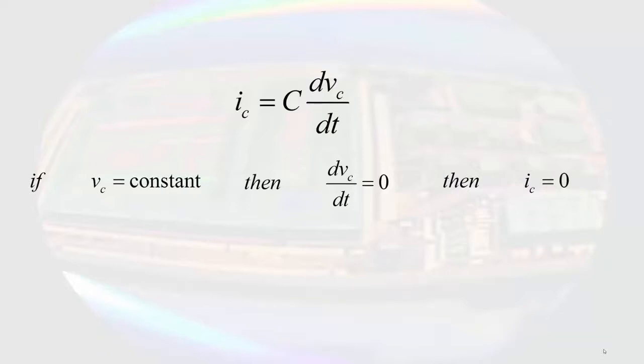The other extreme we could look at would be a voltage that changes very, very quickly. We can look at this by assuming the interval over which a voltage changes becomes vanishingly small. In this case, as the change in voltage per unit time approaches infinity, the current through the capacitor approaches infinity.